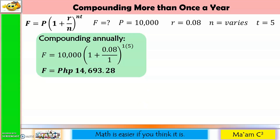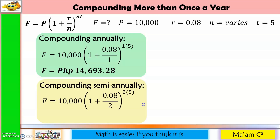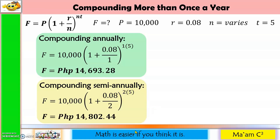Now let us compute compounding semi-annually. Substituting the values, N becomes 2 because this is semi-annually, and the exponent NT also changes with N equal to 2. This gives us 14,802 pesos and 44 centavos.